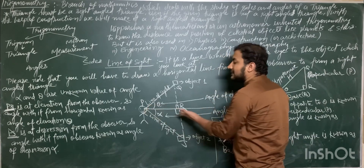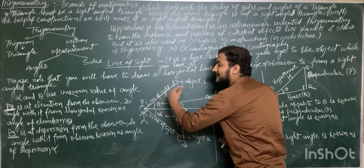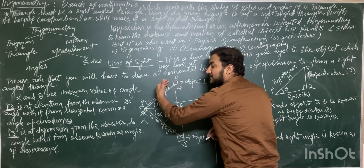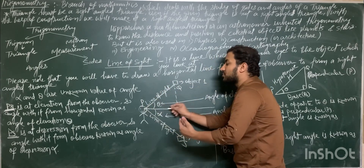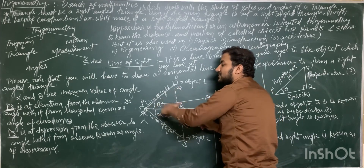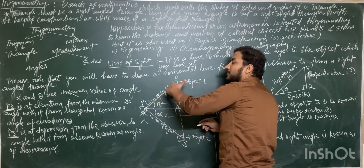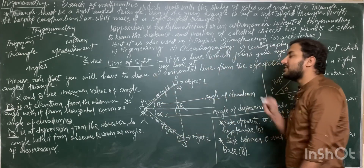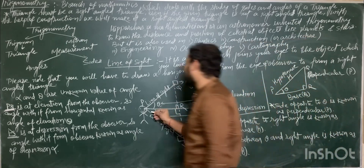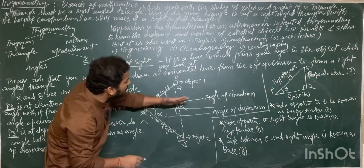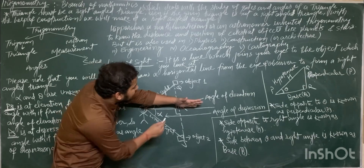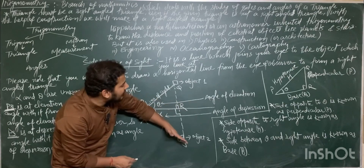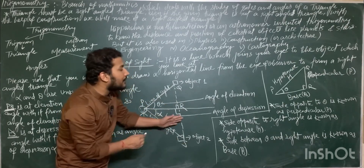This horizontal line and this line of sight — the line of sight is at elevation from this horizontal line. So the angle between this horizontal line and the line of sight which is at elevation is known as the angle of elevation. Similarly, this line of sight is at depression from this horizontal line, so the angle between this horizontal line and the line of sight which is at depression is known as the angle of depression.